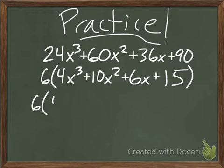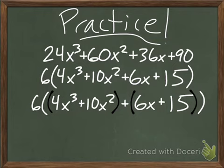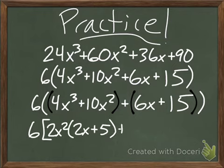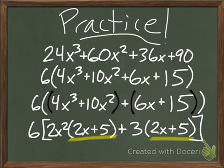Hopefully you saw that there is a GCF and the GCF is 6. Hopefully you grouped correctly, put in parentheses around those terms, and then factor out the GCF from both of those binomial pairs.